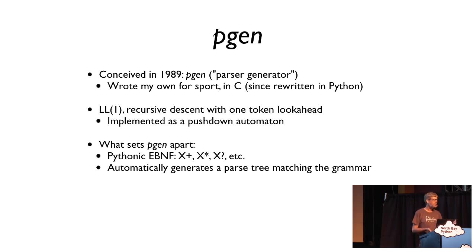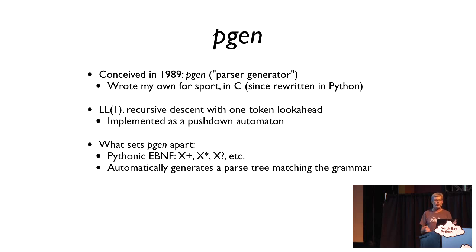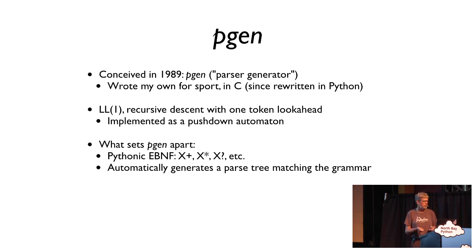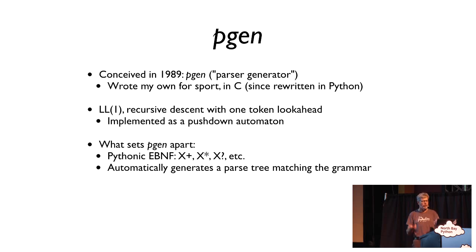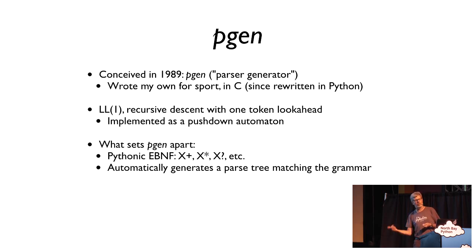One thing that set pgen apart 30 years ago was that I could use EBNF — Extended Backus-Naur Form — so you can use plus for "repeat one or more times", star for "repeat zero or more times", or question mark for "maybe there is an x here or not." The other thing pgen did, which I was very proud of, is that it automatically generates a parse tree. So for a grammar with an expression rule, you automatically get an expression node with term children, plus children, factor children, and so on.